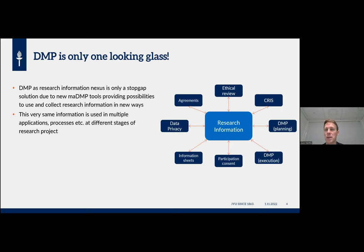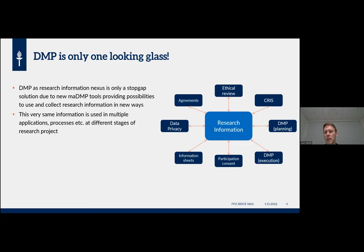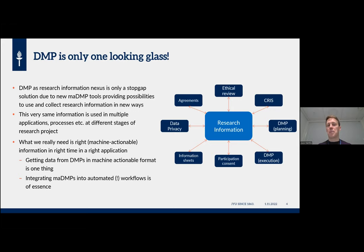If you think more clearly, the very same information is used and produced in multiple different applications and at multiple different stages of a research project. We are using DMPs in this role only because we have already seen tools like Tuli, Data Stewardship Wizard, Argos, or others that are capable of providing machine-actionable data. But the research information in the middle is the key — the DMP is only one, albeit quite a comprehensive, part on the outer circle.